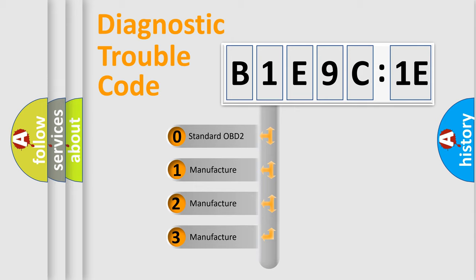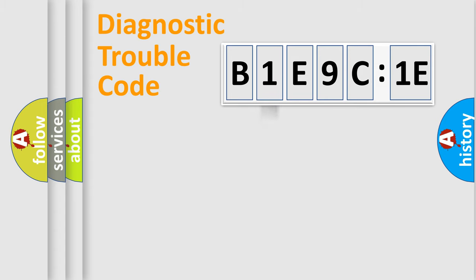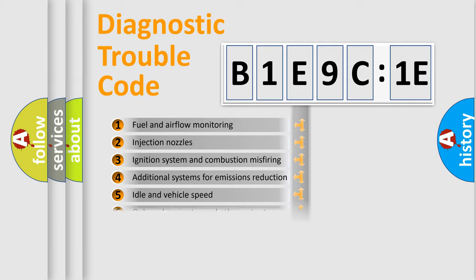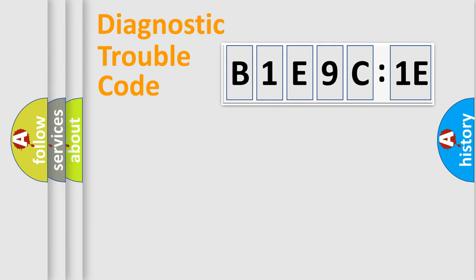If the second character is expressed as zero, it is a standardized error. In the case of numbers 1, 2, or 3, it is a more prestigious expression of the car-specific error. The third character specifies a subset of errors. The distribution shown is valid only for the standardized DTC code. Only the last two characters define the specific fault of the group.